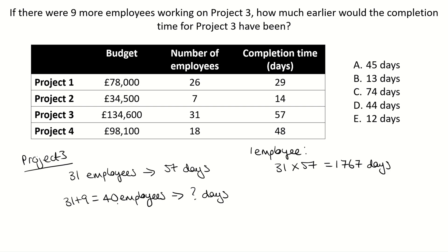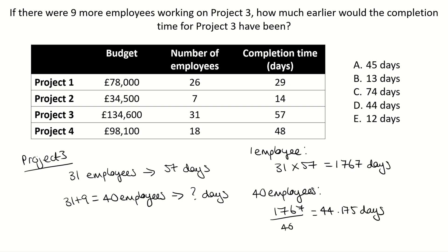Since we have got 40 employees, to find out how long that would take, we just need to do the number of days it takes for one employee divided by 40. So 1767 divided by 40 gives us 44.175 days. Now because we have got 44.175 days, we can't round it down because it takes longer than 44 days. So that means it will take 45 days to complete.